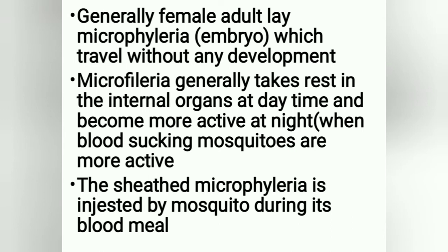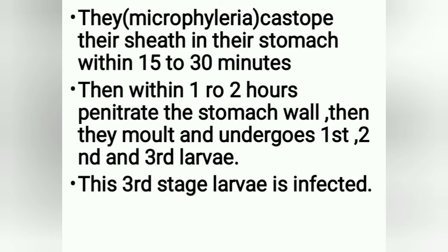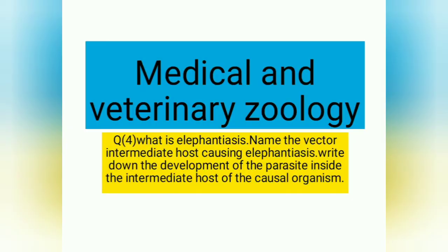The female adult lays microfilaria (embryos) which travel without any development. Microfilaria generally rest in internal organs during daytime and become more active at night when blood-sucking mosquitoes are more active. The sheathed microfilaria is ingested during the mosquito's blood meal; they cast off their sheath in the stomach within 15–30 minutes, then within one to two hours penetrate the stomach wall. They then moult and undergo development through first, second, and third larval stages. This third-stage larva is the infective form.